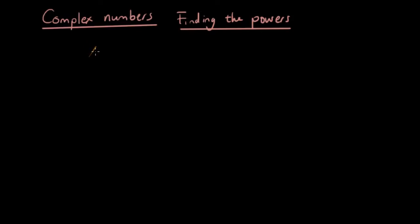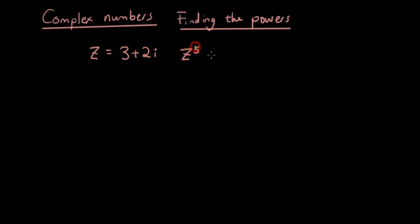So if I define a complex number as z equals 3 plus 2i, I want to be able to find z to the power of 5, in terms of a plus bi, and I want to know what a is and what b is.